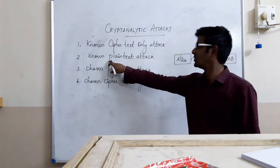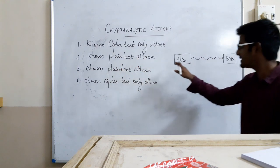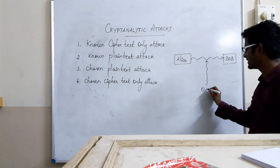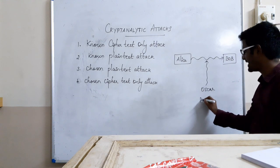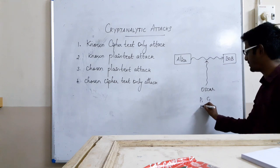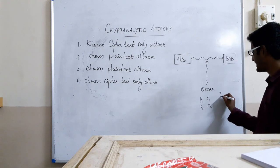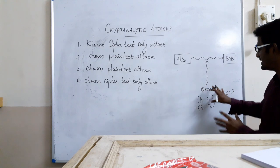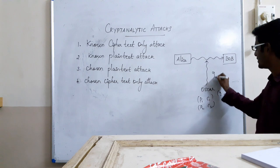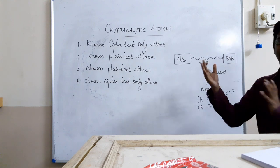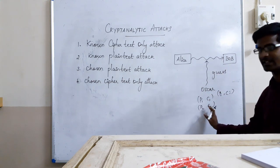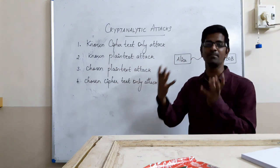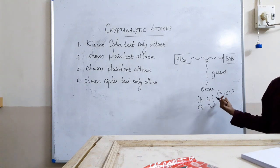The second type is the Known Plaintext Attack. In this case, Alice is communicating to Bob, and the adversary Oscar has some plaintext-ciphertext pairs: P1-C1, P2-C2. He knows some plaintext-ciphertext pairs and will try to guess what communication is being held. The ciphertext is being transmitted and he knows certain plaintext, so he has certain plaintext-ciphertext pairs.